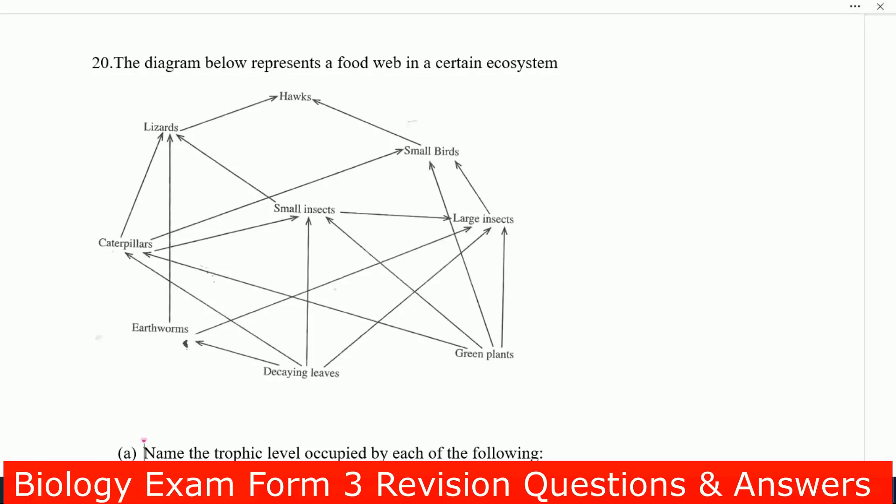Caterpillars they are eaten by birds. Small insects are eaten also by lizards. Decaying leaves are eaten by small insects, and decaying leaves are also eaten by caterpillars. You can also see earthworms being eaten by large insects.